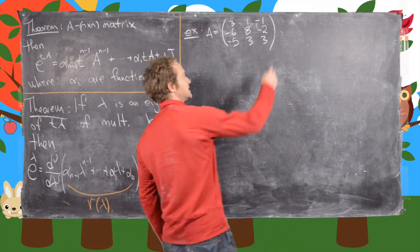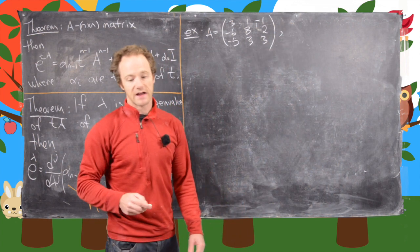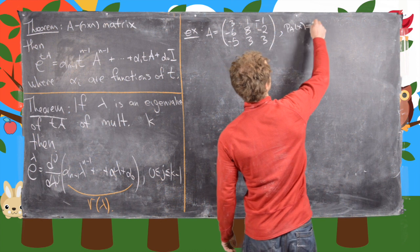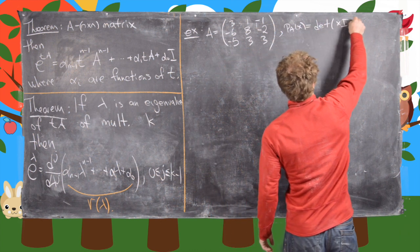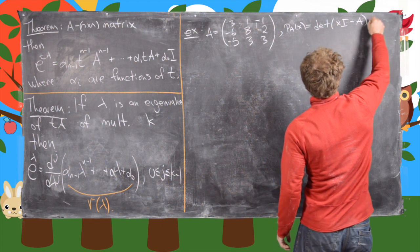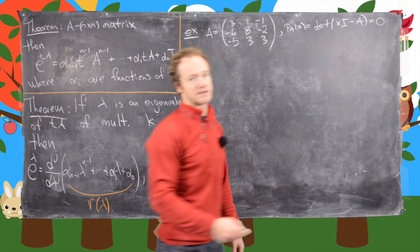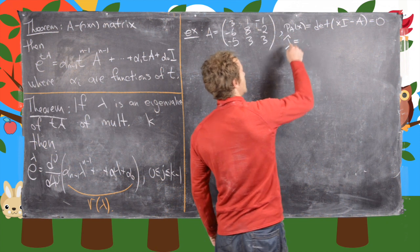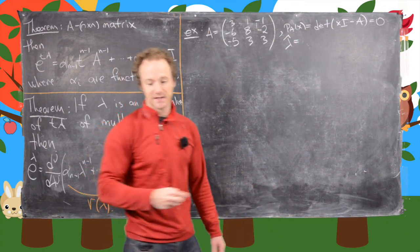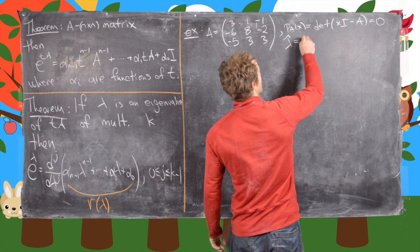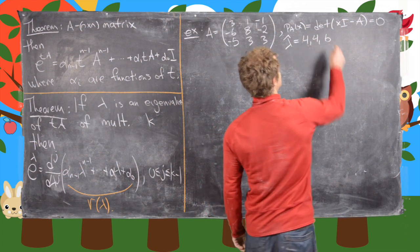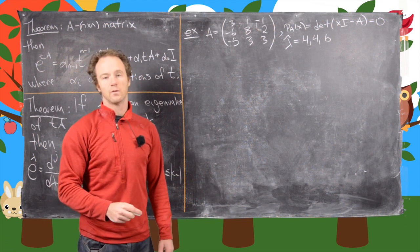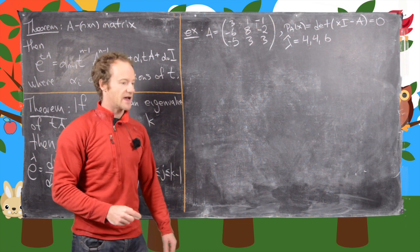So maybe the first thing to do would be to calculate the eigenvalues, and you can do that by looking at the characteristic polynomial. So let's just recall that's the determinant of (ξI - A), we set that equal to zero. We get that the eigenvalues of A, which I'll call lambda hat, are 4, 4, and 6. So we've got one of multiplicity two—that's 4—and then we have one of multiplicity one, and that's 6.